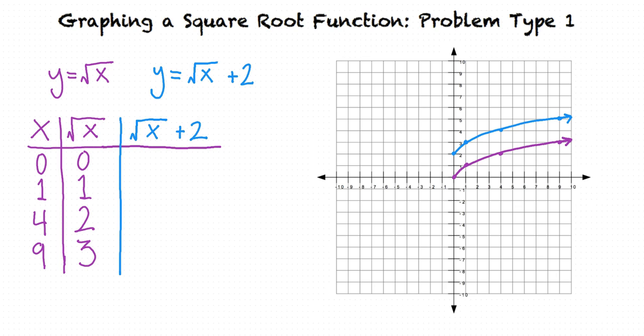Using the same x values as before, we see that this new function yields the following values. When x is 0, y equals 2. When x is 1, y equals 1 plus 2, which is 3. When x is 4, y equals the square root of 4, 2, plus 2, which is 4. And when x is 9, y equals the square root of 9, which is 3, plus 2, which is 5.